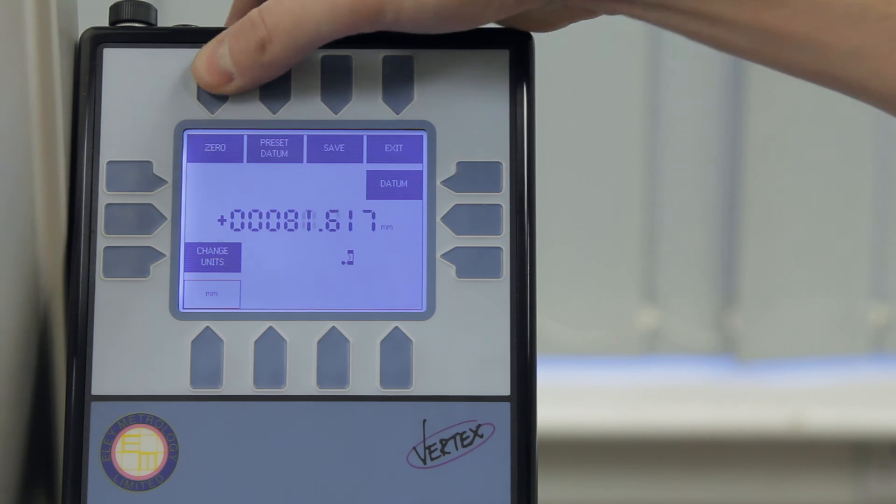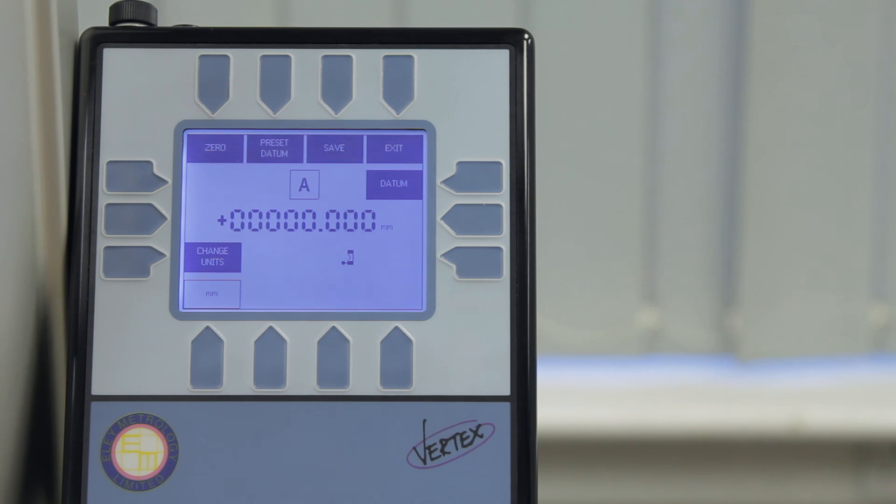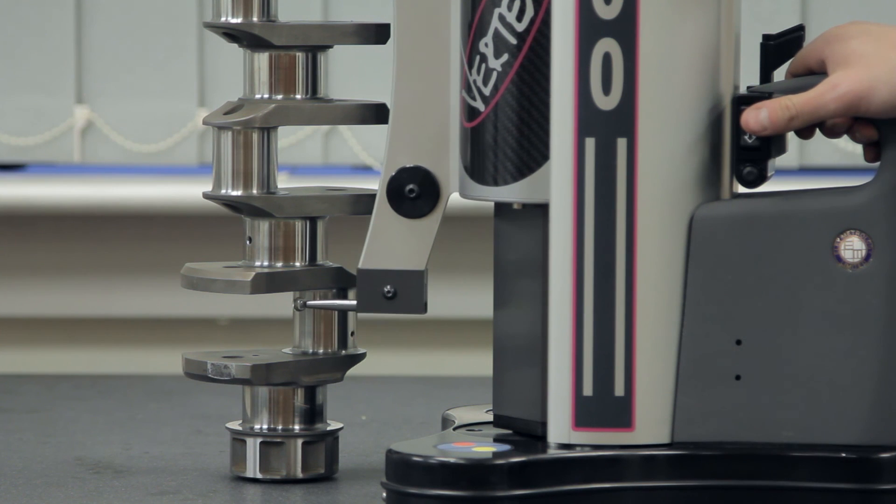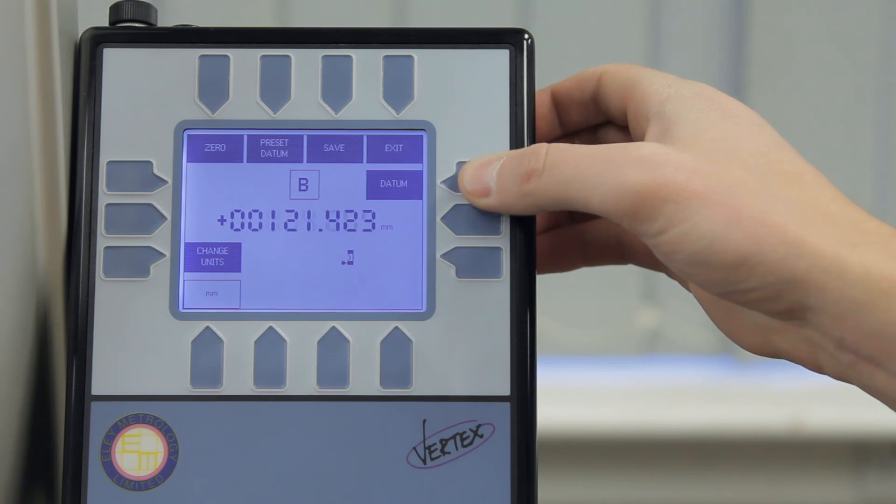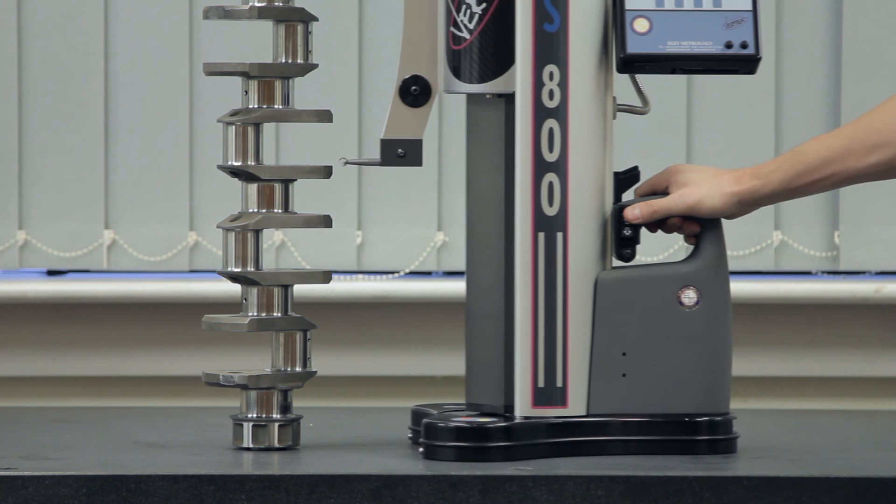A base datum is assigned to a feature on the inspection component. Measurements can be made relative to this point. The user can assign up to 8 individual datums, and the measurements between any of these can then be reviewed.